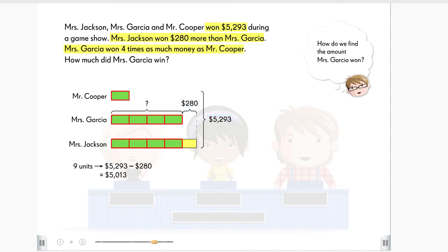We get $5,013. We then find the value of one unit. We get $557. Let's find the value of four units. We get $2,228.